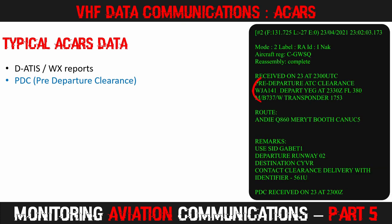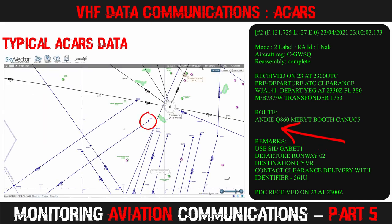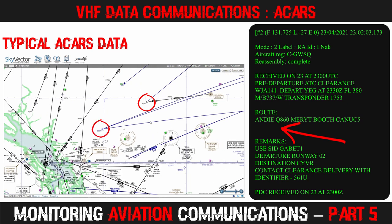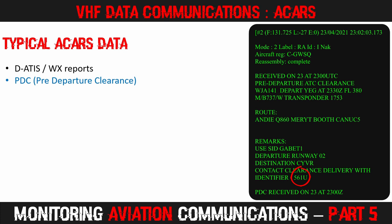Here we can see that WestJet 141 is cleared from Edmonton to Vancouver, cruising at flight level 380. We can see the aircraft is a Boeing 737, and it will be squawking 1753. The routing information is also displayed. The aircraft will depart from runway 02 using the GABAT-1 SID, or Standard Instrument Departure, then fly to waypoint Andy in order to join Airway Q860. It will leave the airway at Merritt and proceed to a waypoint called Booth, then fly the Canuck 5 arrival into Vancouver. The identifier is used when the aircraft contacts clearance on the VHF voice frequency — instead of reading everything back, they just inform the controller that they have PDC 561 uniform.